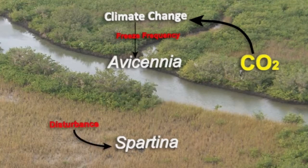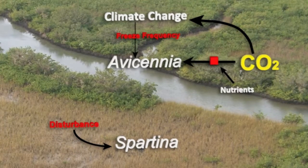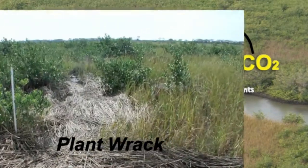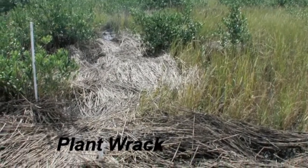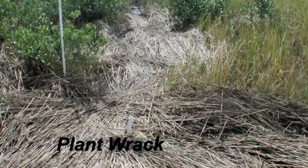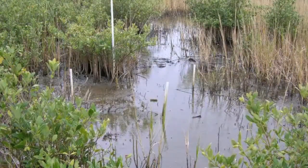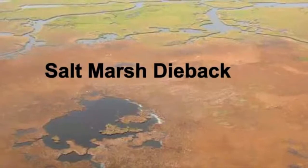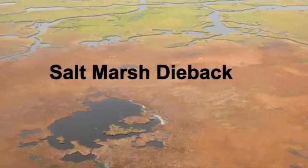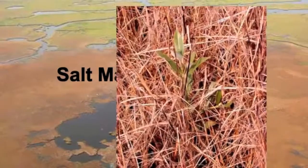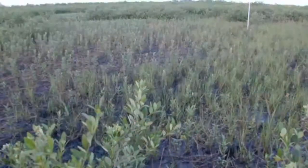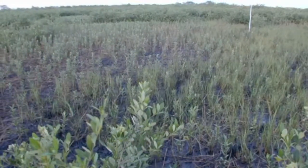However, if Spartina is eliminated by a disturbance, then Avicennia's growth is enhanced by CO2, particularly where nutrient availability is high. Both small-scale and large-scale disturbances occur in salt marshes. For example, the deposition of dead plant material, called wrack, can smother Spartina, creating bare patches where mangroves can get established. Large-scale dieback of salt marsh has also occurred in the past, which allowed suppressed mangroves to become dominant in areas once occupied by Spartina.